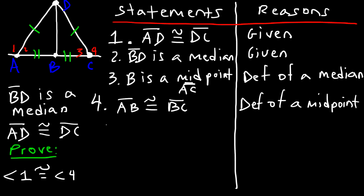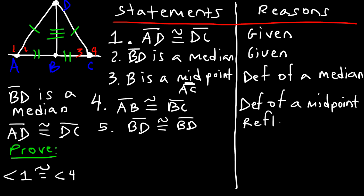Now let's move on to statement five. Notice that BD is a common side — it's common to both triangles on the left and on the right. So BD is congruent to itself, and this is based on the reflexive property.